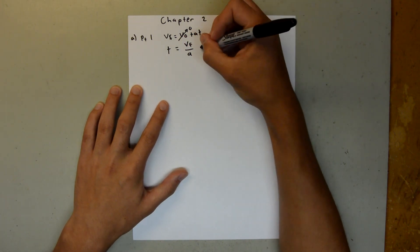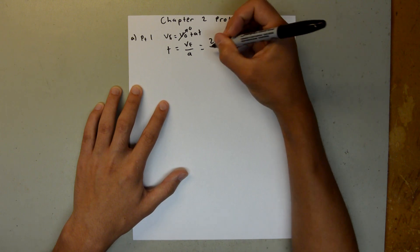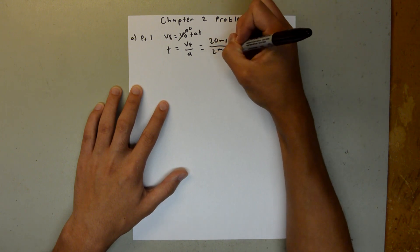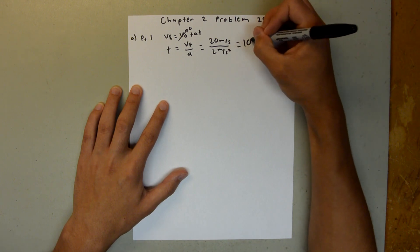We have 20 meters per second and then 2 meters per second squared. And when you plug that into your calculator, you should get 10 seconds.